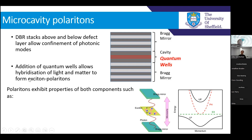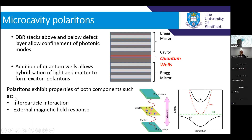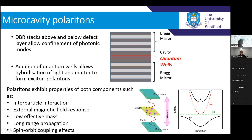These particles exhibit properties of both components. From the excitonic component, they exhibit interparticle interactions through the exchange interaction and an external magnetic field response. From the photonic component, they inherit a very low effective mass, long-range propagation, and spin-orbit coupling effects — which underpins this Zitterbewegung work.